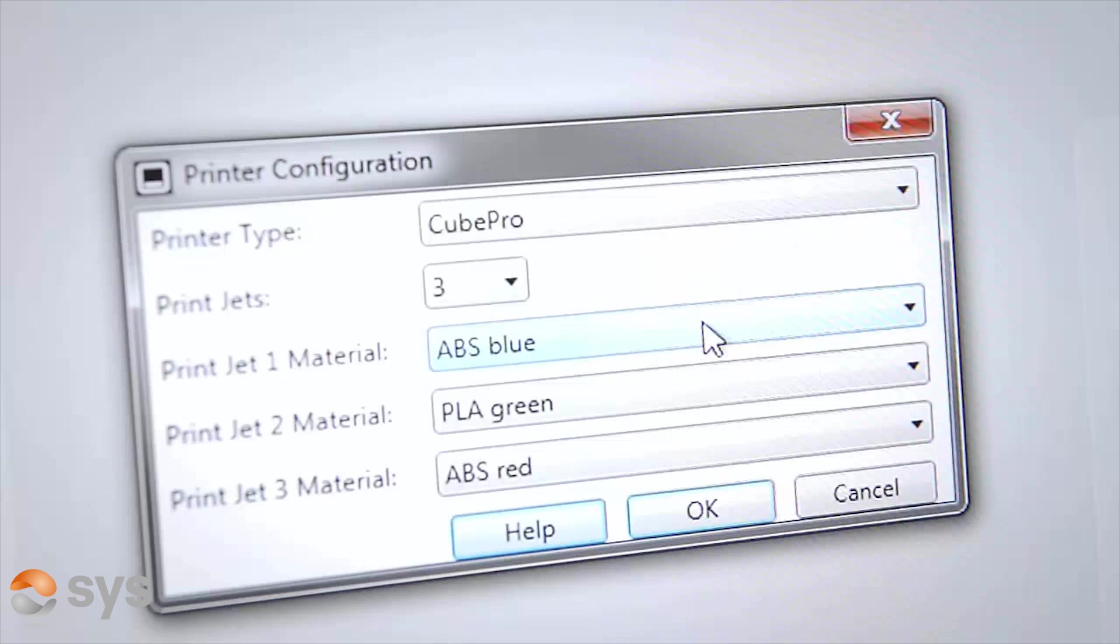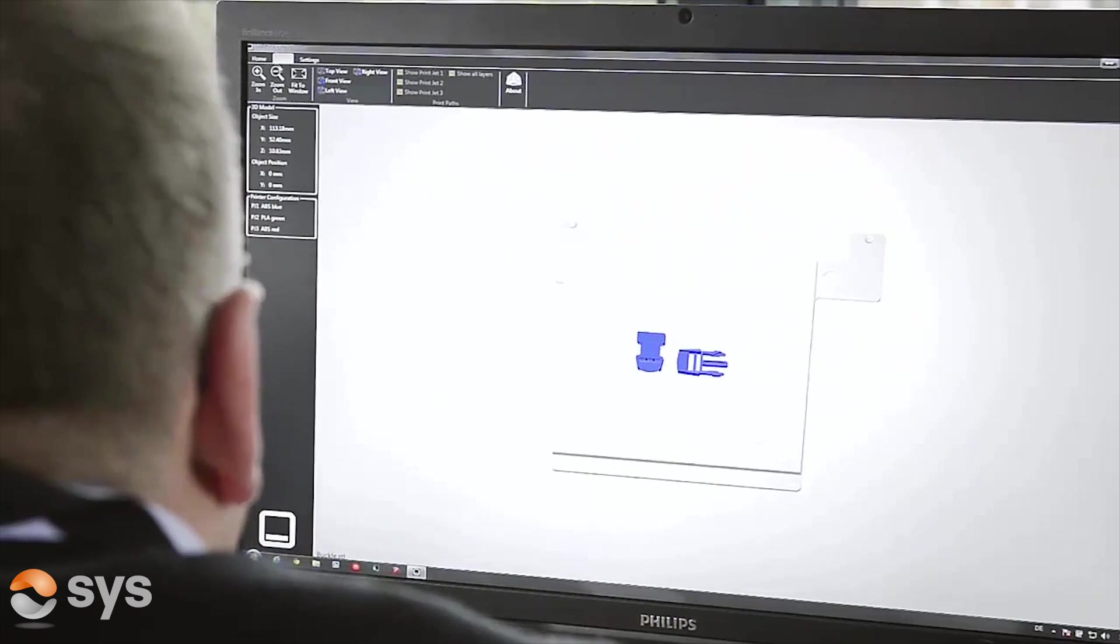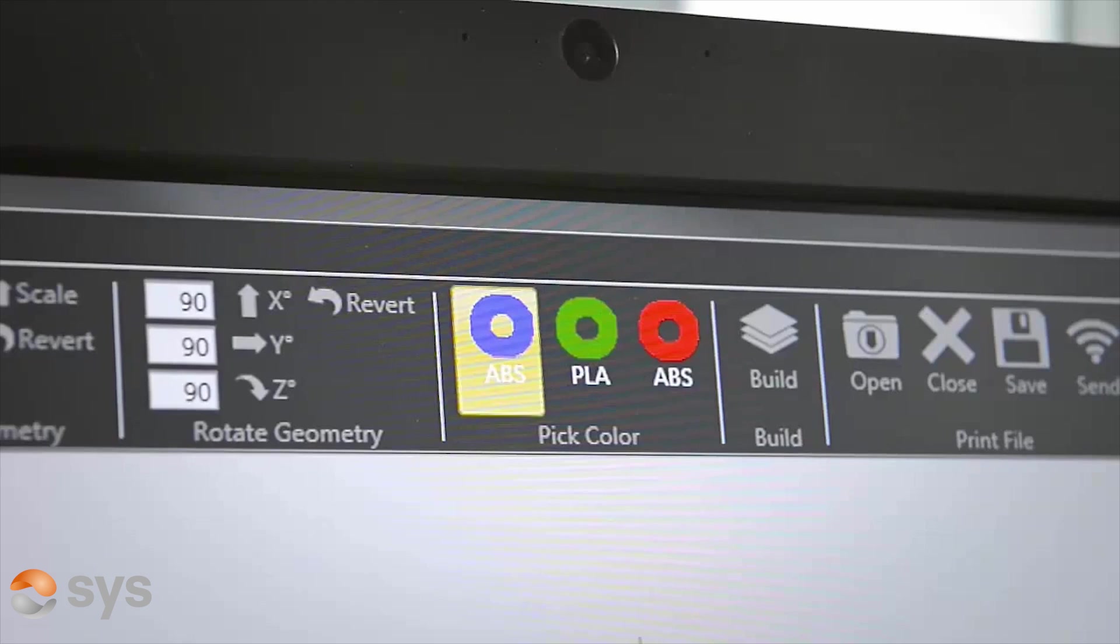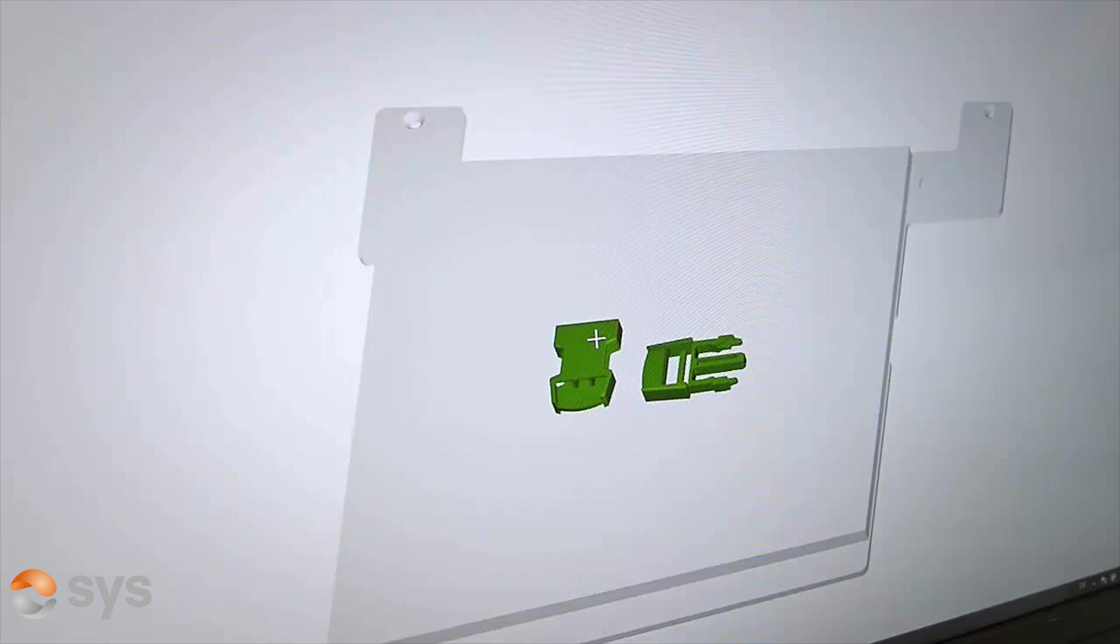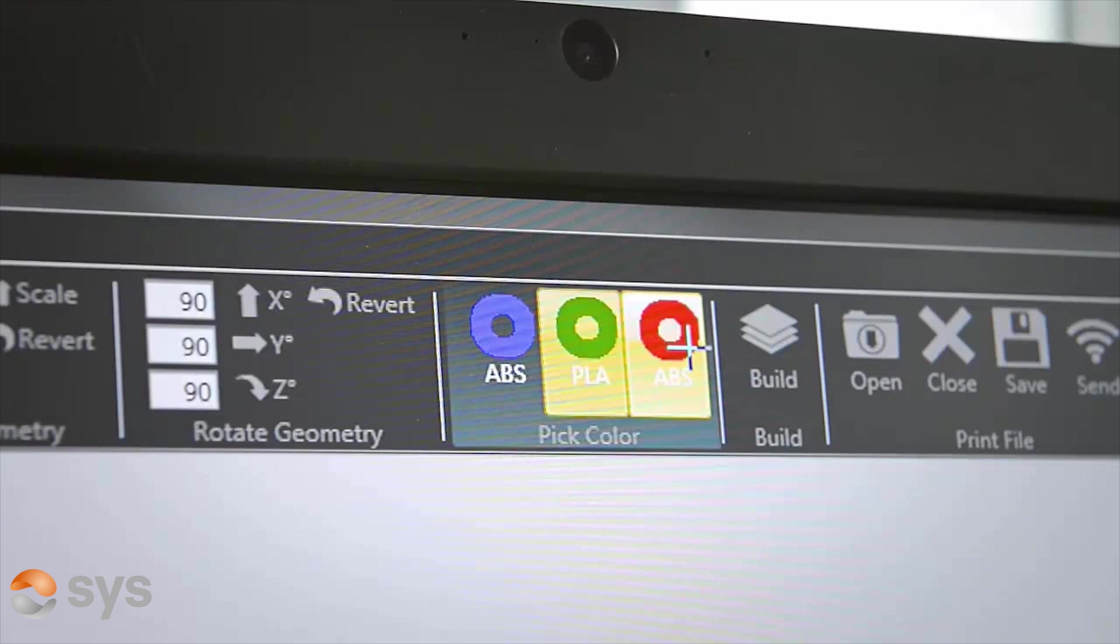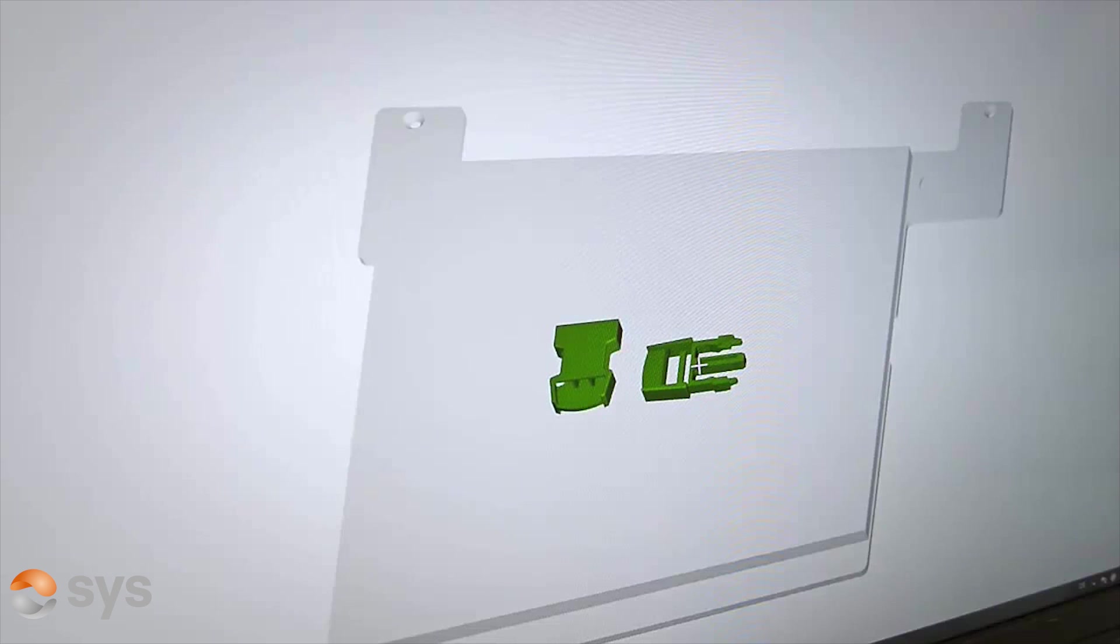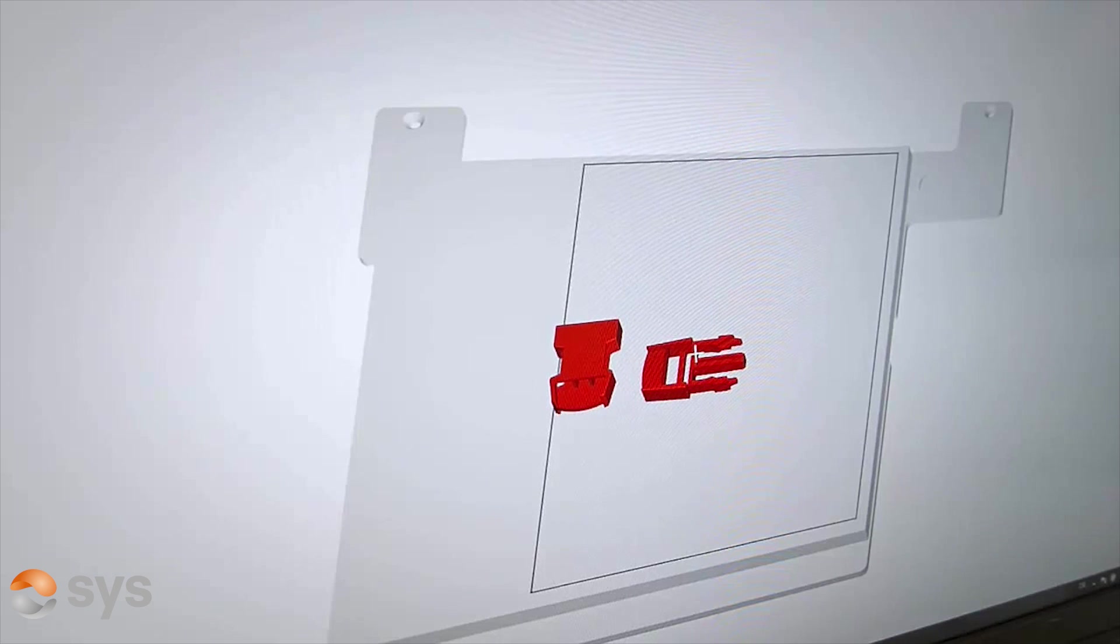The Cube Pro does have the ability to print with multiple colors where the model design needs to be sectioned correctly to allow this to happen. The actual available build area shown is smaller than the overall chamber size due to the three jets mounted across the x-axis. The default is set to single color, so when selecting multicolor all you need to do is deselect single color.